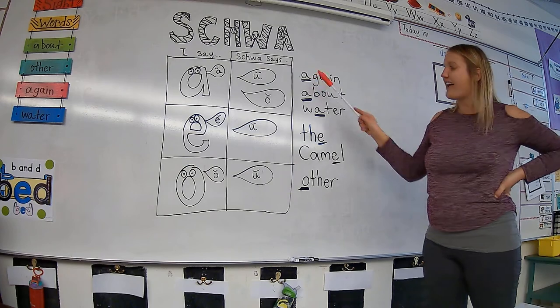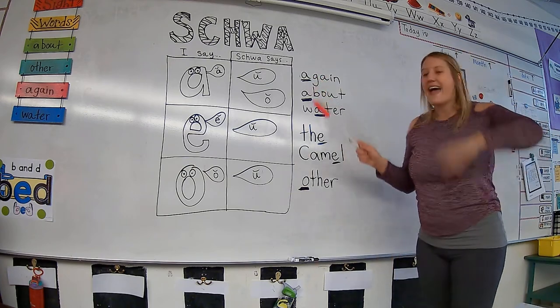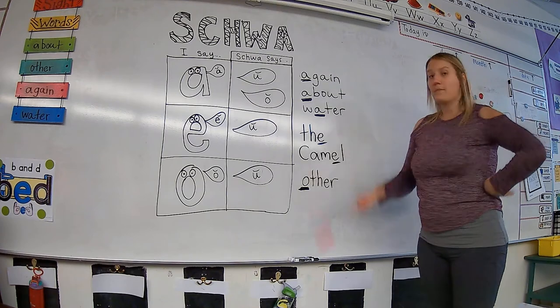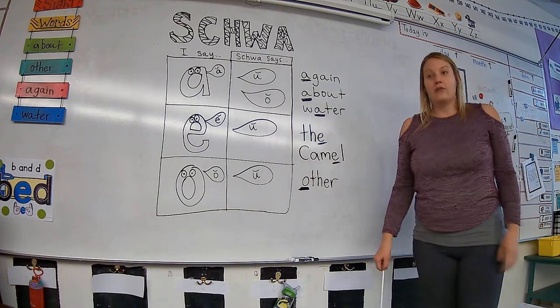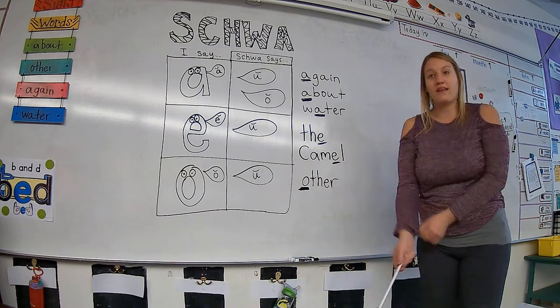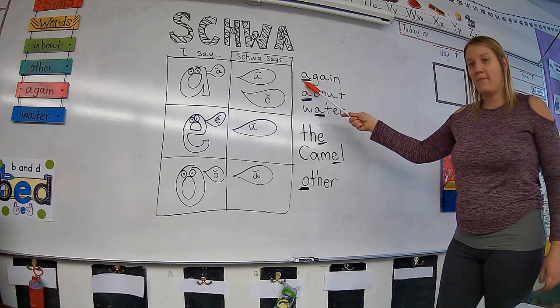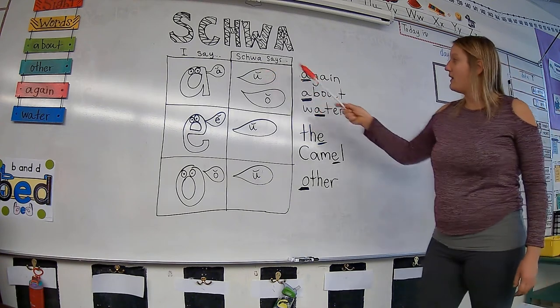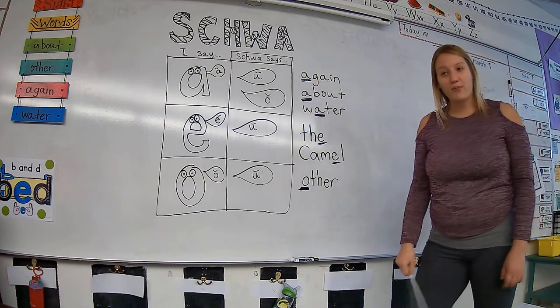And it starts with the letter A. And if we read that like stretchy snake, we would have ah-gain. But it's not ah-gain. It's uh-gain. So sometimes we just have to try different vowel sounds if the sound is not working. Ah and A did not work for again. So I'll plug in uh and see if that works. Again. It does work.